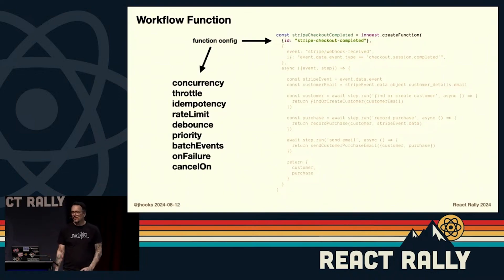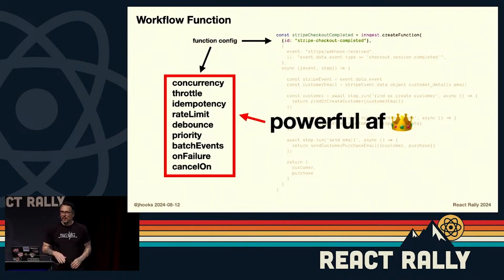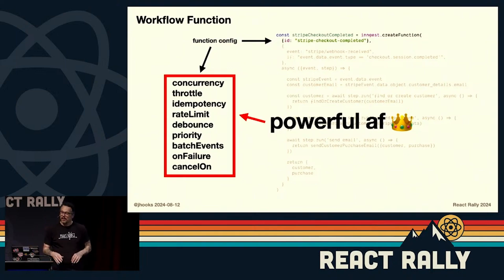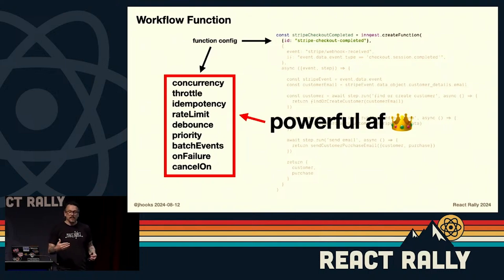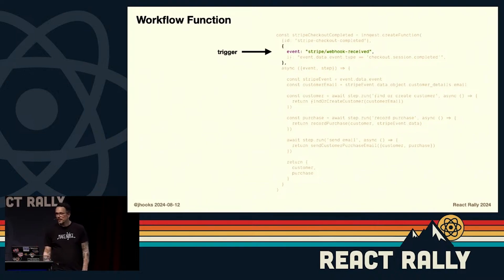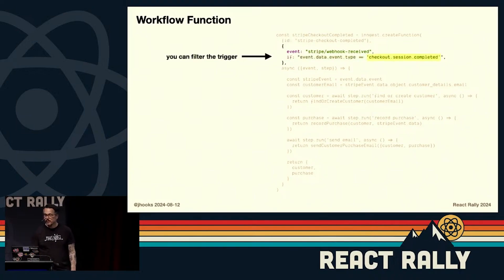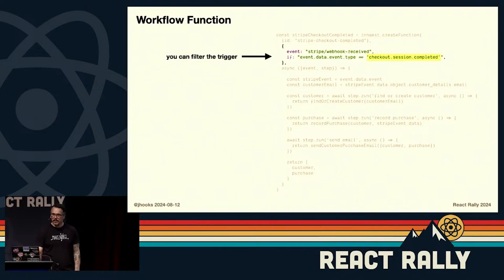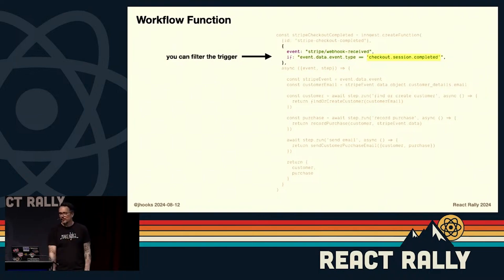This is the extent of configuration a function can do, and this is where the hard part comes in. Having an event handler or a queue isn't that difficult — but concurrency, throttling, idempotency, rate limiting, debouncing, priority, batch limits, failure handling, or canceling a waiting event: that is particularly difficult to implement yourself. Inngest handles all of that. The other trigger types include crons — if you want something to happen every five minutes, five days, or five hours. You can also add complex filters, like specifying that only checkout session complete events go to this handler.